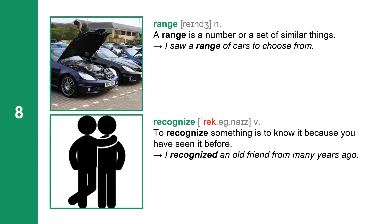Next one: range. Range is a noun. A range is a number or a set of similar things. I saw a range of cars to choose from.